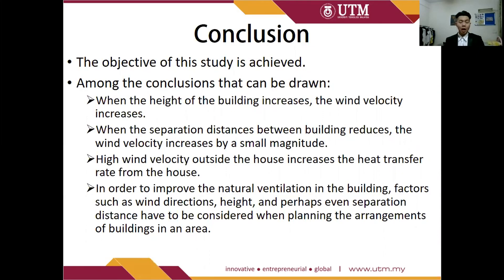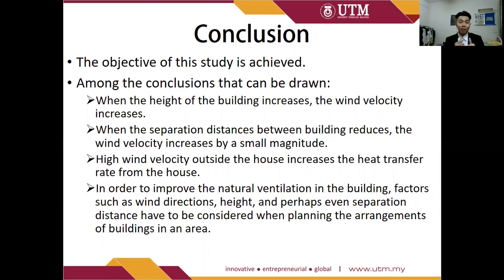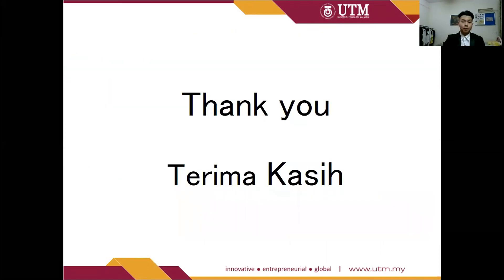The objective of this study is achieved. Among the conclusions: when the height of a building increases, wind velocity increases. When the separation distance between buildings reduces, wind velocity increases by a small magnitude. High wind velocity outside the house increases the heat transfer rate, consequently promoting better heat loss. In order to improve natural ventilation and reduce reliance on air conditioning, factors such as wind direction, height, and separation distance have to be considered when planning the arrangement of buildings in an area. Thank you.